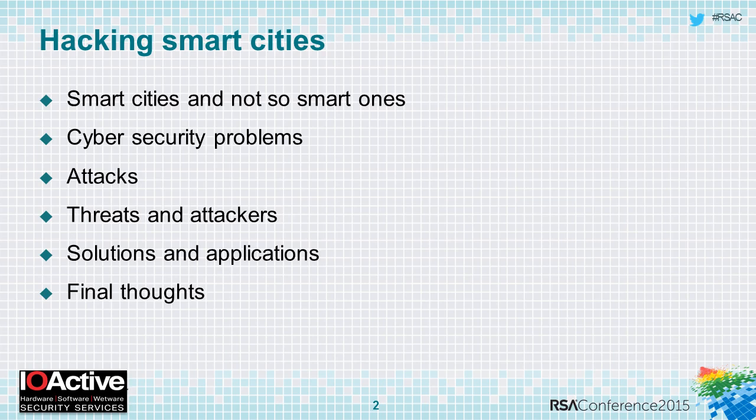I will go over these problems one by one, describing them, saying how they are affecting the cities and what the impact is. Then I will move to attacks — how these problems in cities can be exploited by attackers. When we talk about attackers, we talk about different ones, so I will go over describing what could be the main actors launching attacks on cities and what the main threats will be. Finally, I will go over some basic solutions in order to improve the security of cities. I'll give some very basic solutions because a lot of work is really needed right now, because the situation, as you will see in the presentation, is not really good.